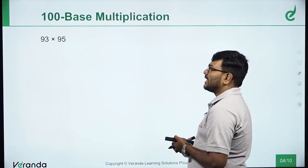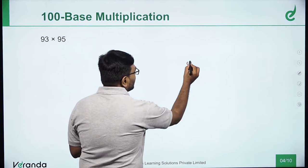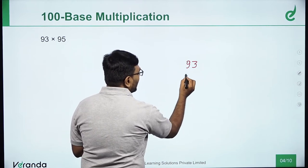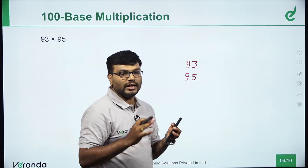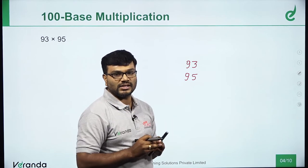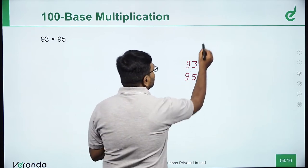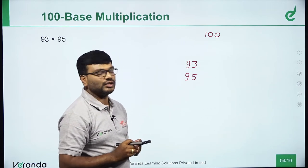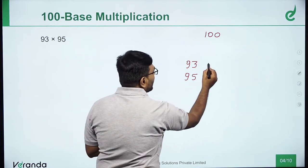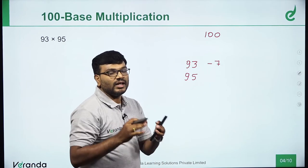Extra questions: 100 base multiplication, 93 into 95. Use the base method. Two numbers nearest to base 100. The differences from base 100.